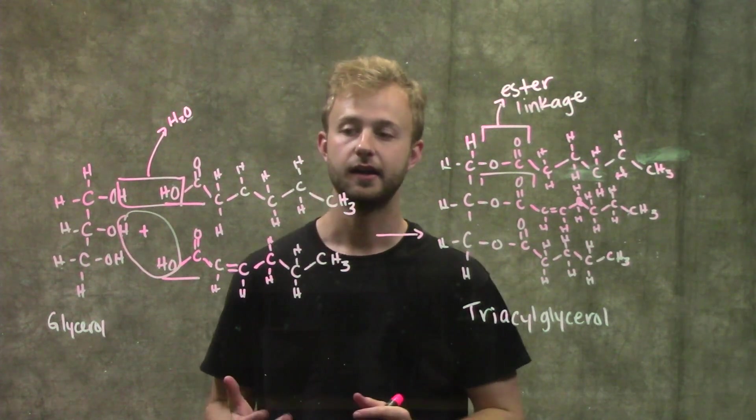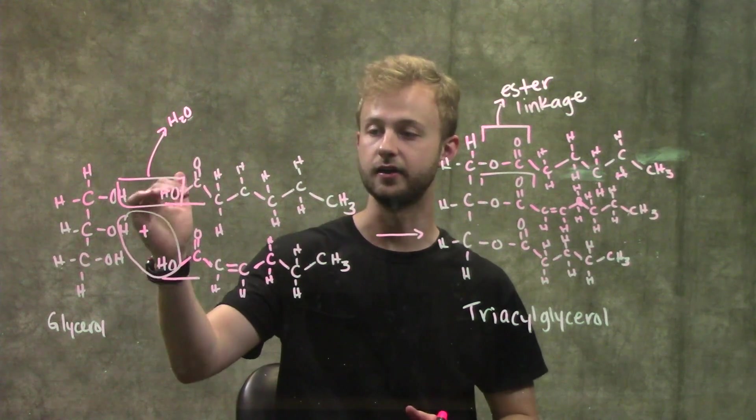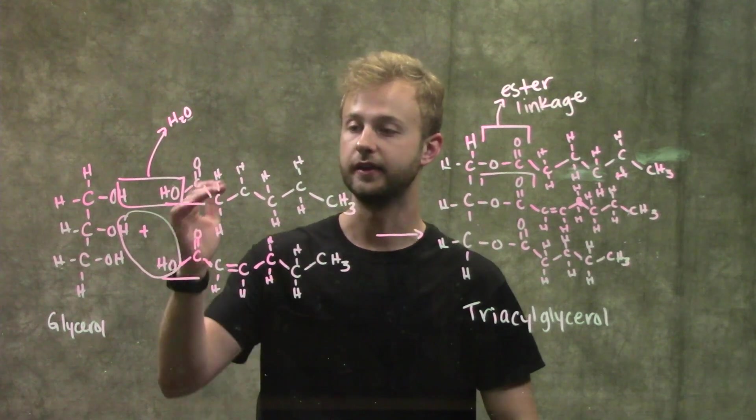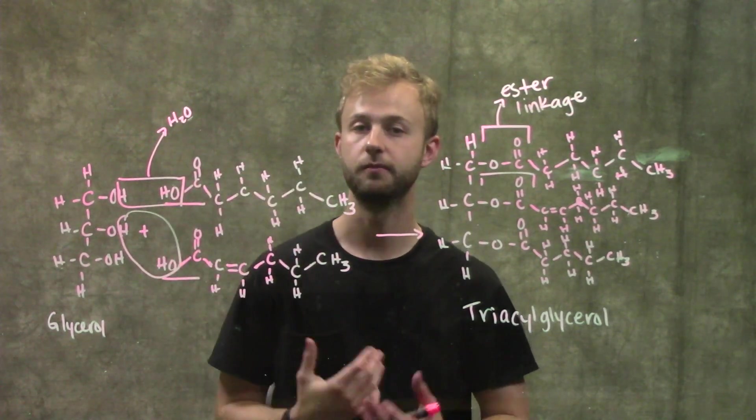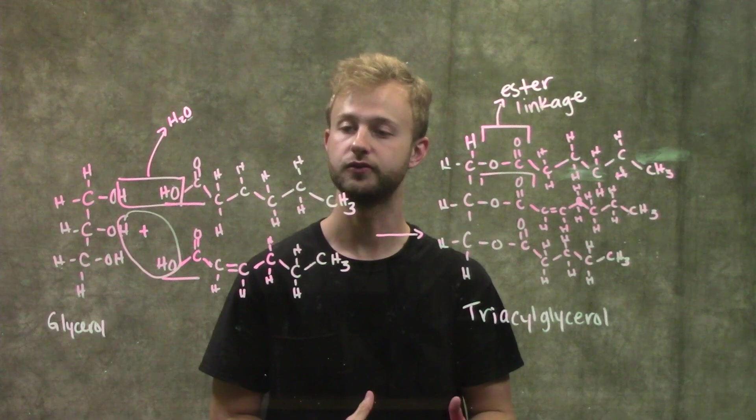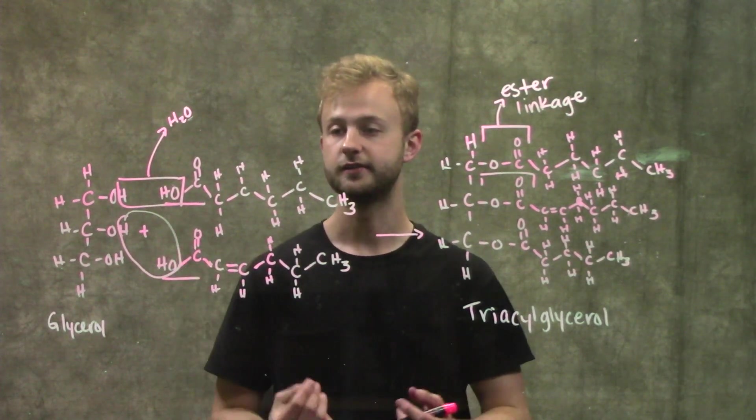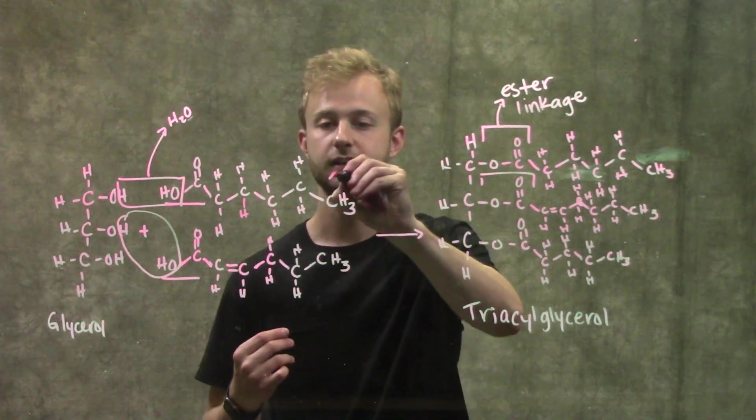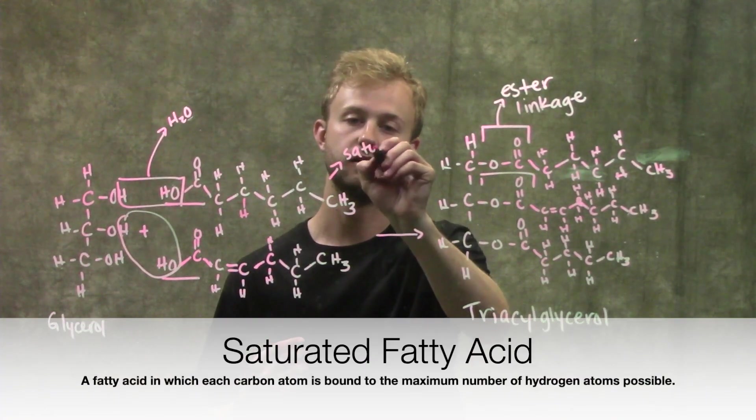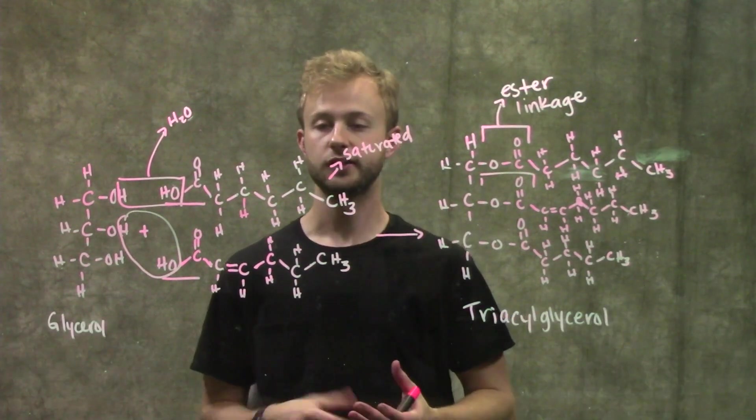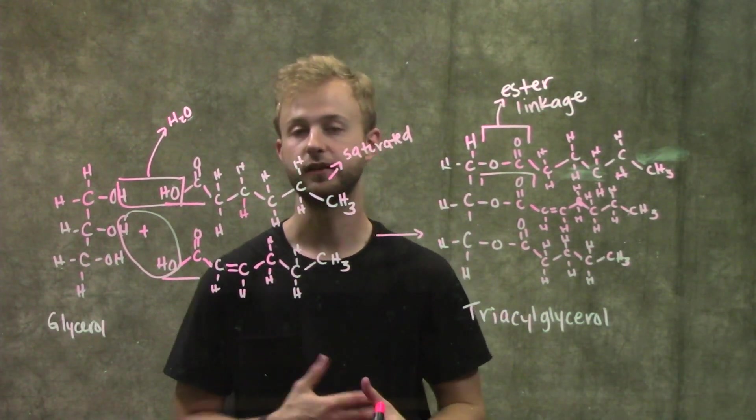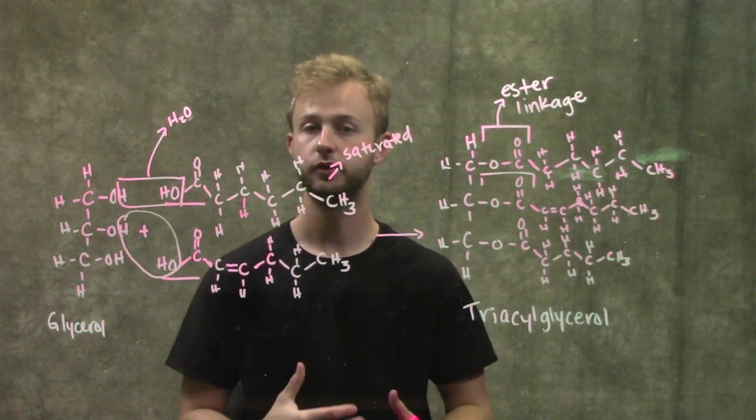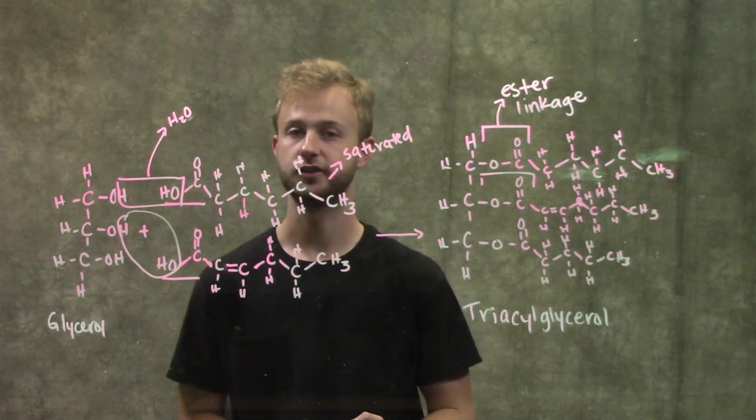This first fatty acid is just a normal standard fatty acid. There's no double bonds, there's no triple bonds. That means that every carbon atom is going to be bound to the most hydrogen atoms that it can be bound to. We can also say that this fatty acid is saturated with hydrogen atoms. So that means that this is going to be a saturated fatty acid. Saturated fatty acids are typically animal fats. Animal fats tend to have no double bonds, no triple bonds, and have as much hydrogen as possible.